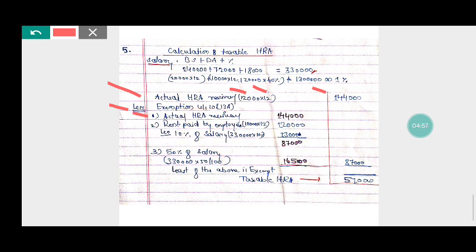First, actual HRA received, so actual HRA received is Rs. 1,44,000. Next, rent paid by the employee less 10% of salary. So rent paid by the employee is 10,000 into 12, that is Rs. 1,20,000.